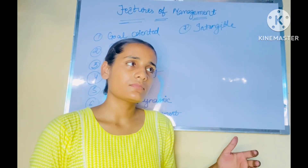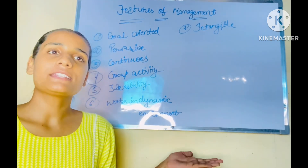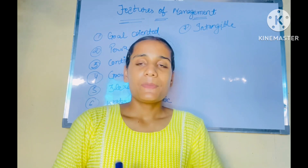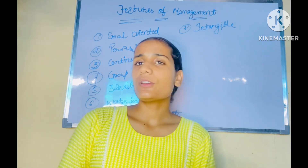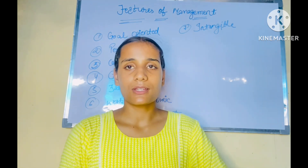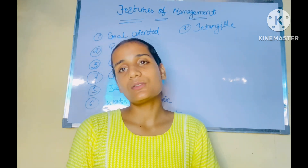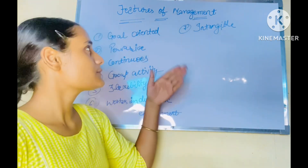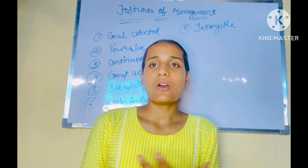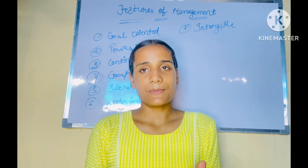There are mainly seven features of management. The first feature is Goal Oriented. There is no work without a goal. Every business has a goal - whether to earn profit or provide a service. Management works more effectively and efficiently when there is a clear goal. So management is a goal-oriented process - we can achieve organization goals more effectively and efficiently with the help of proper management.